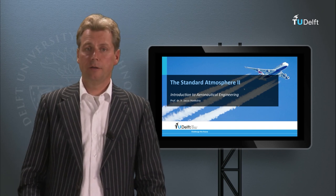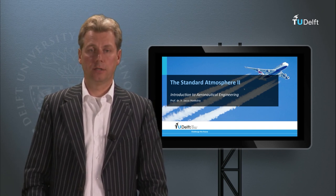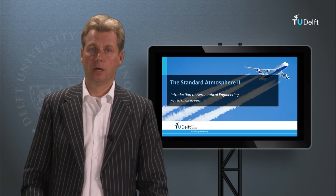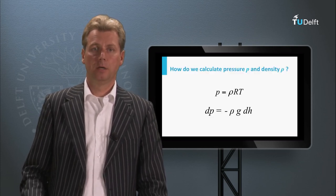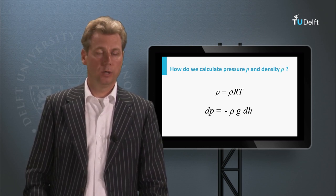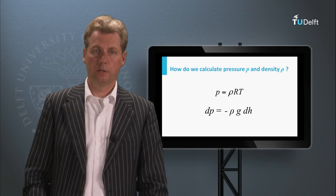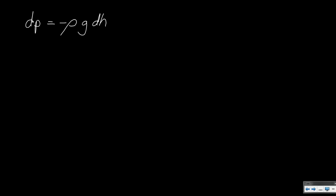In this video we will derive the equations for pressure and density for the international standard atmosphere. Remember the two equations derived last time: the equation of state, and the hydrostatic equation. These two equations are the starting point of our derivation, especially the hydrostatic equation: dp equals minus rho g dh.